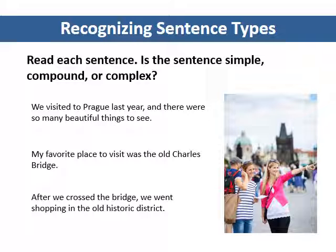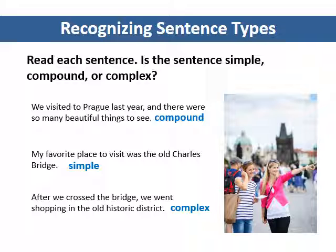Recognizing sentence types. The first sentence is compound because it has two subject-verb combinations that are combined with the coordinating conjunction 'and.' The second sentence is a simple sentence — it has only one subject-verb combination. The last sentence is complex. It has a dependent clause, 'after we crossed the bridge,' and an independent clause, 'we went shopping in the old historic district.' Notice that 'after' is at the beginning of the sentence, so there is also a comma between the two clauses.